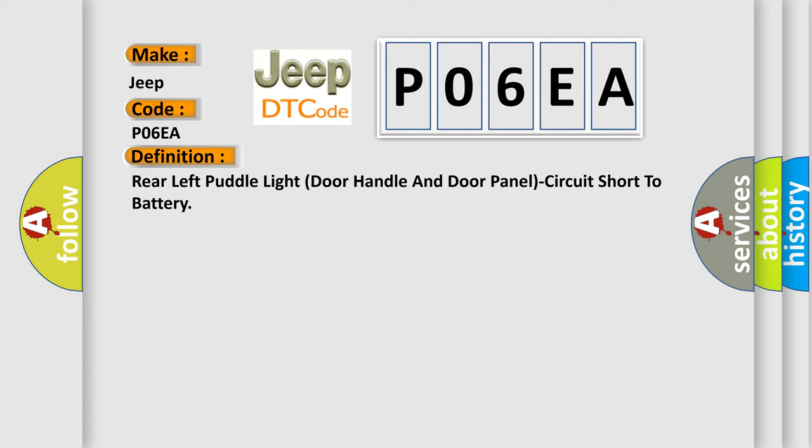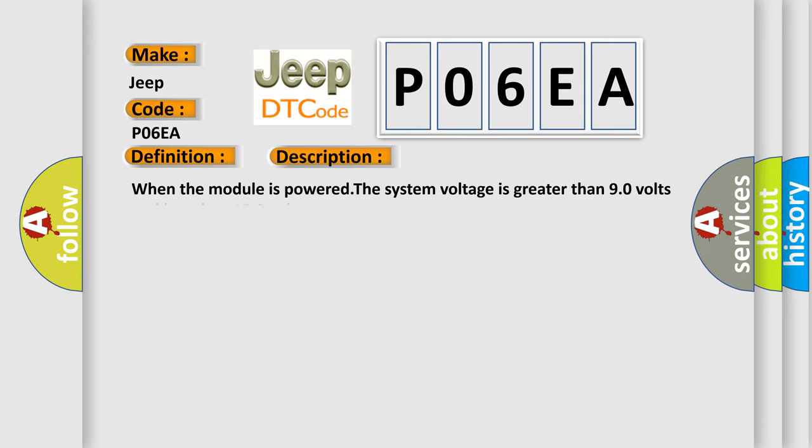And now this is a short description of this DTC code. When the module is powered, the system voltage is greater than 9.0 volts and less than 16.0 volts. This diagnostic error occurs most often in these cases.